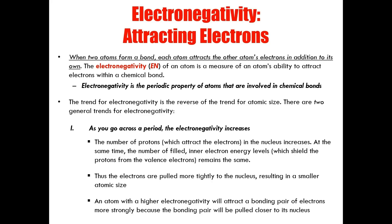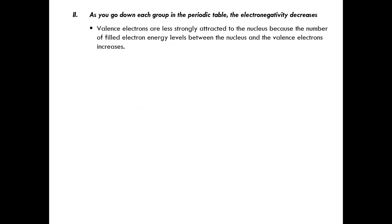If an atom has a higher electronegativity, it will attract the bonding pair of electrons within a chemical bond more strongly because the bonding pair will be pulled closer towards its nucleus. Now, as you go down a group on the periodic table, the electronegativity decreases due to an increase in electron shielding. The ability of a nucleus to attract valence electrons decreases as a result of an increase in the number of inner energy levels.